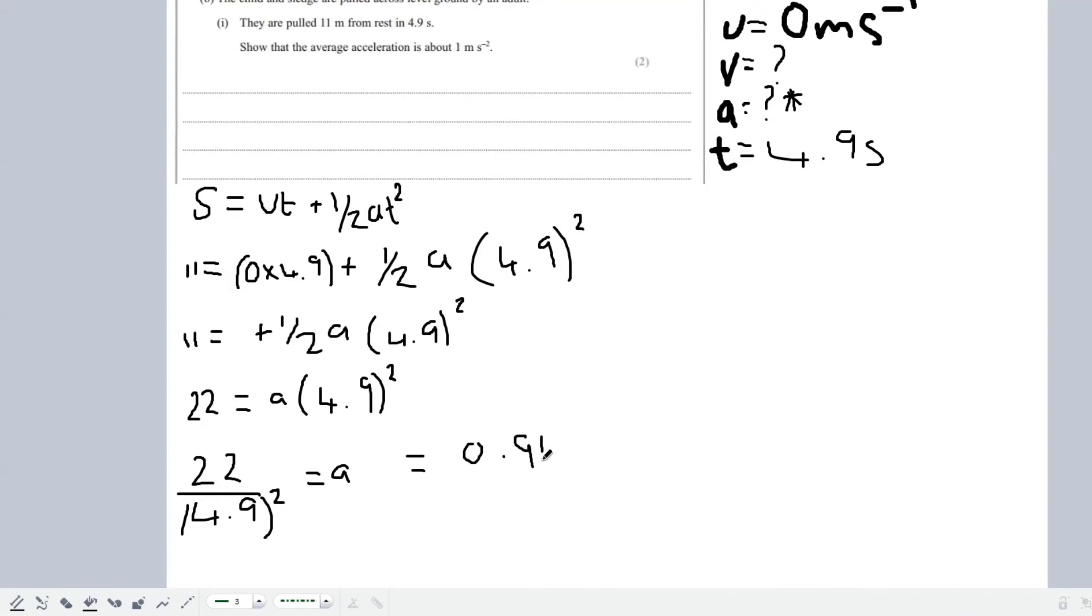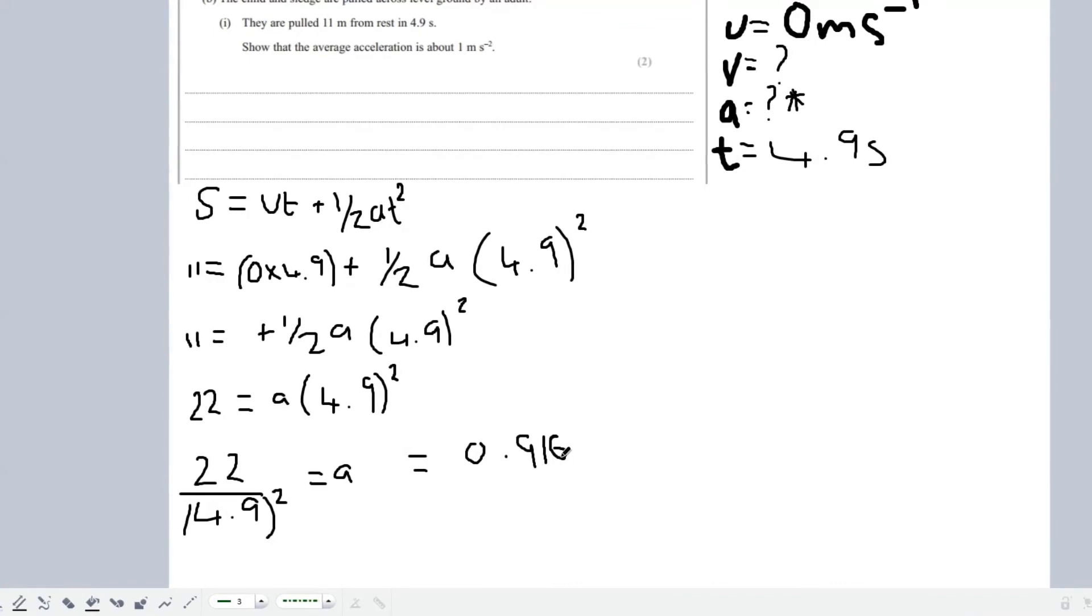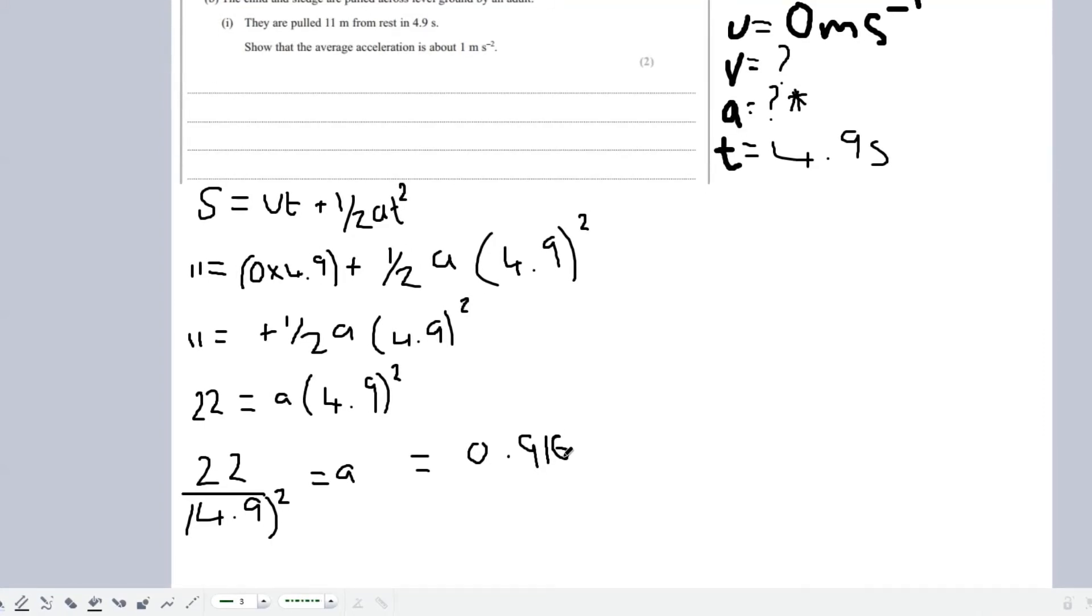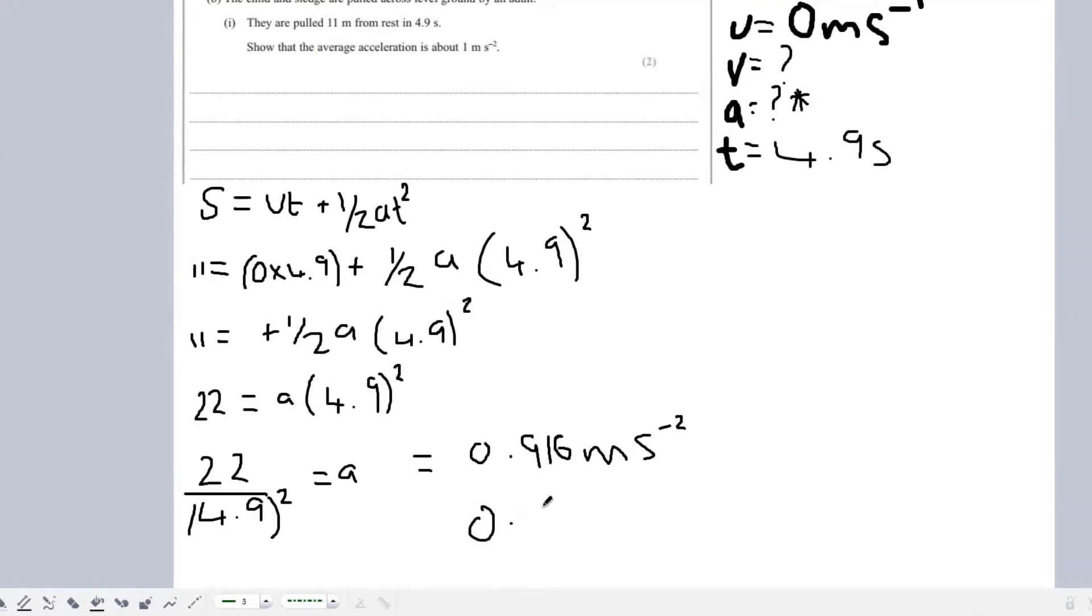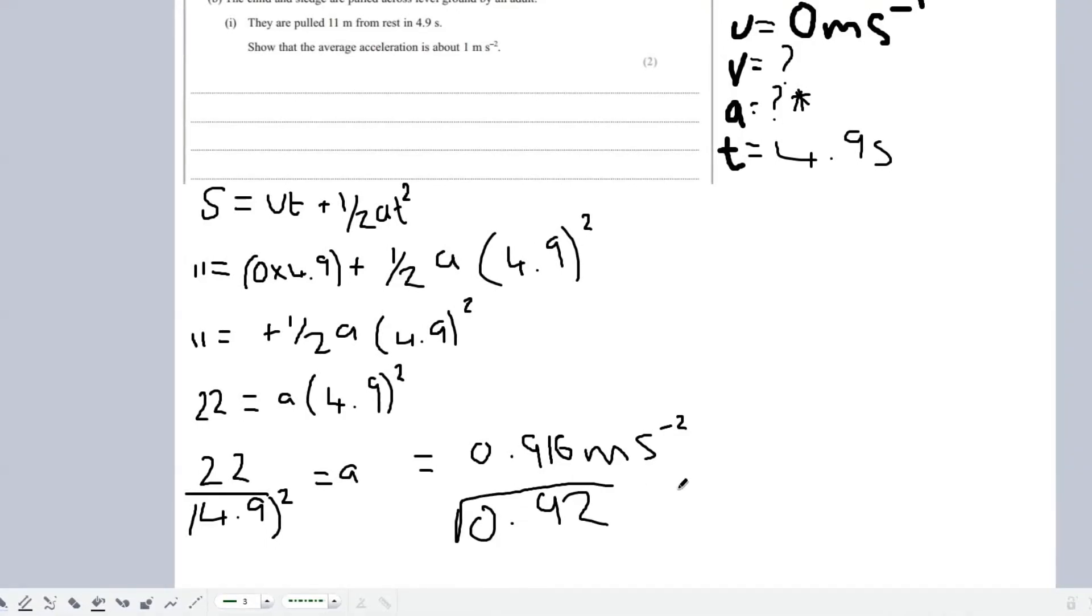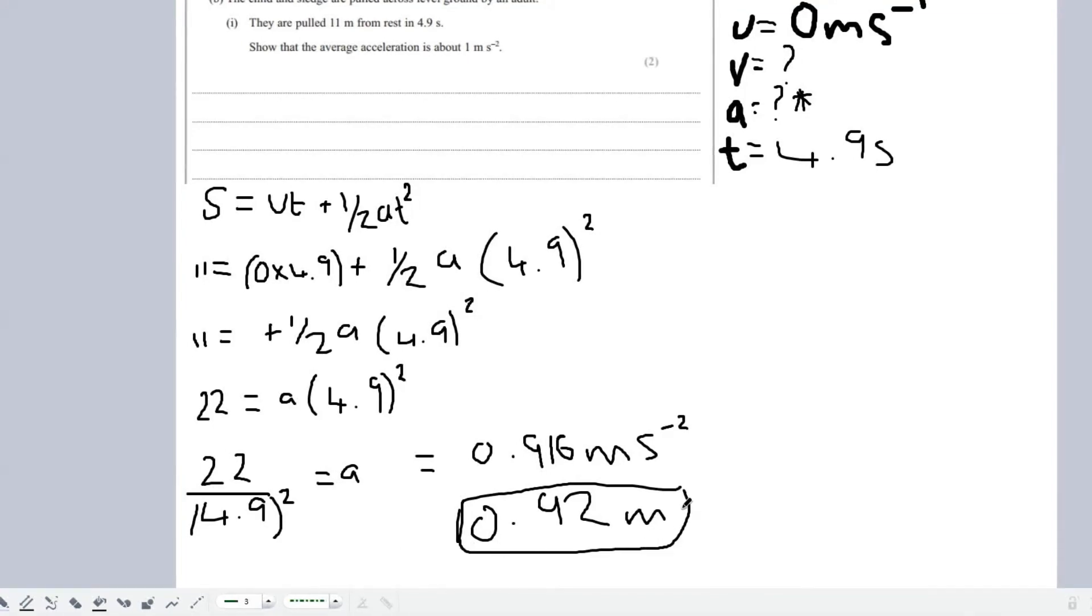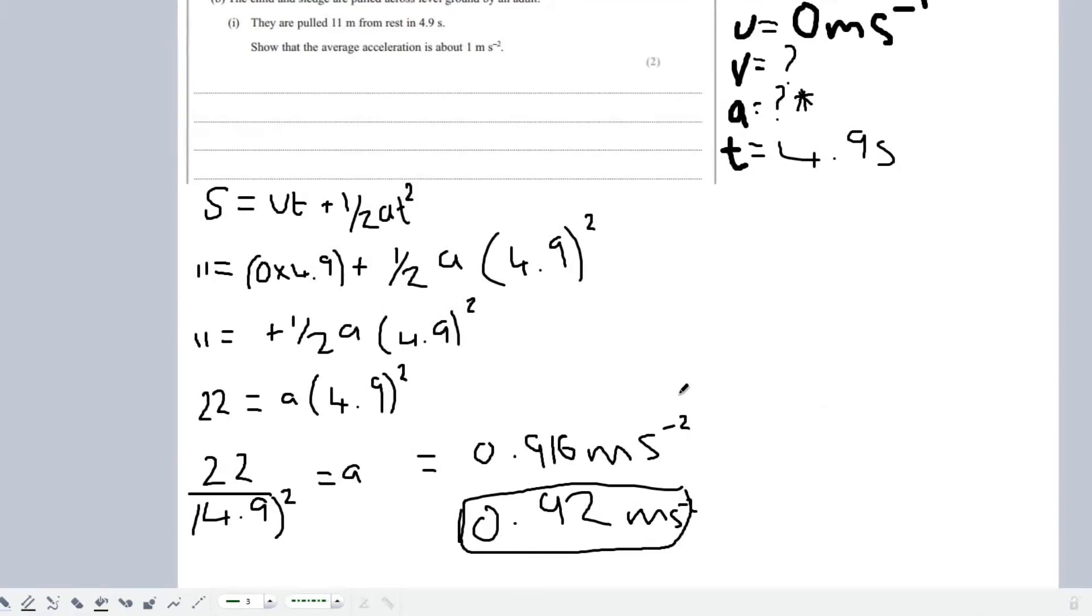If we look back at the question, it's only a two-mark question. If you look at all the numbers we've been given, they're all to two significant figures. So, let's rewrite this as 0.92. This is our answer, not forgetting units. Now let's move on to the next question.